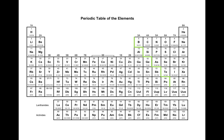Now you're back with your periodic table. The first thing you should do is draw this stair-step line — mine is green here, you can use a different color. Then make sure your groups are numbered 1 through 18 across the top. There are 18 columns and 18 groups on the periodic table. This stair-step line divides the left from the right side of the periodic table.